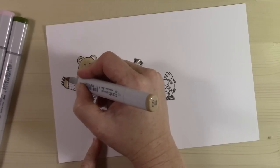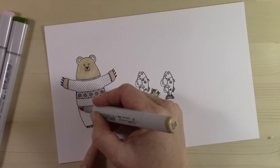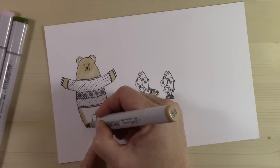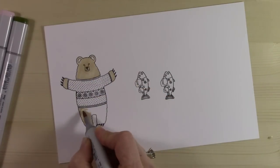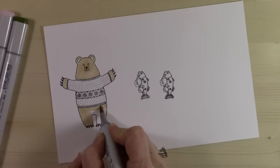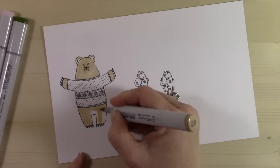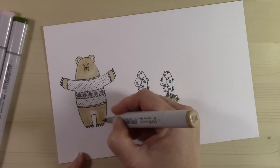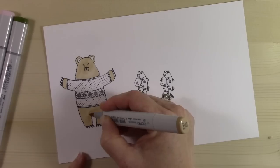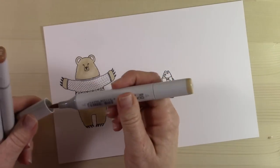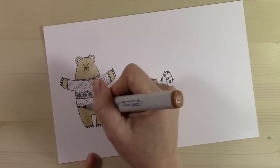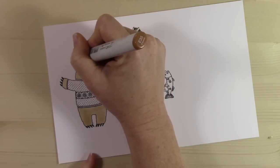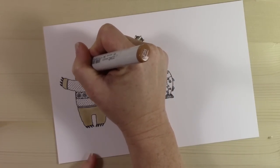The way that Copic markers work is they get into the paper and they actually soak into the fibers of the paper. If you add other colors to them, the colors actually mix, so they're blending underneath. You can't really see it happening on top, but they moisten the paper and then they move around together. So if you lay down a coat of your lightest color first, it allows your other colors to blend easier.